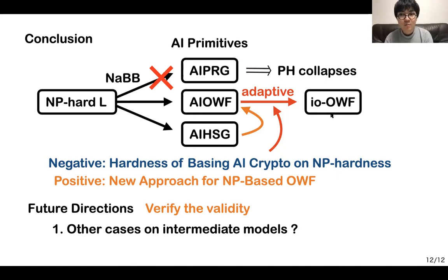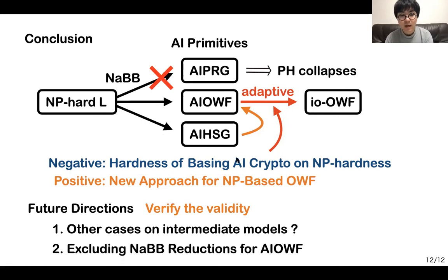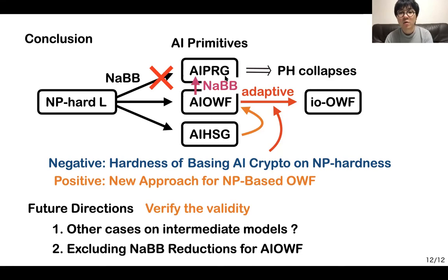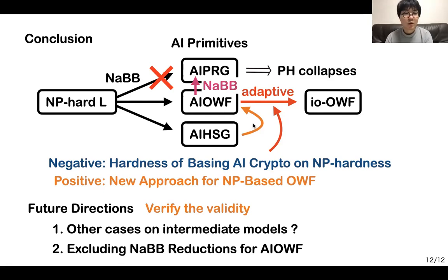There is still the possibility that these non-adaptive black box reductions also imply the collapse of the polynomial hierarchy. So the second future direction is to exclude such reductions, especially for auxiliary input one-way functions. The most natural approach would be to construct an auxiliary input pseudorandom generator based on an auxiliary input one-way function via a non-adaptive black box security reduction, but at present I do not have any idea how to construct such a simple security reduction. Thank you for your attention.